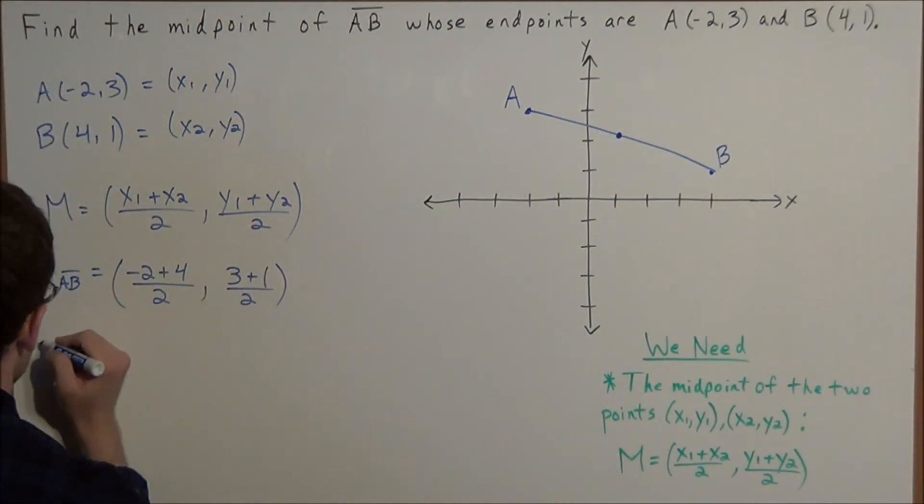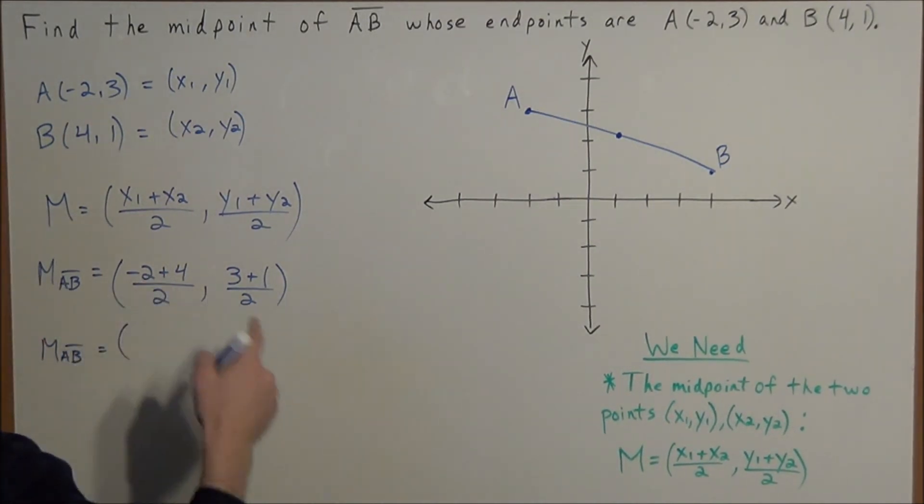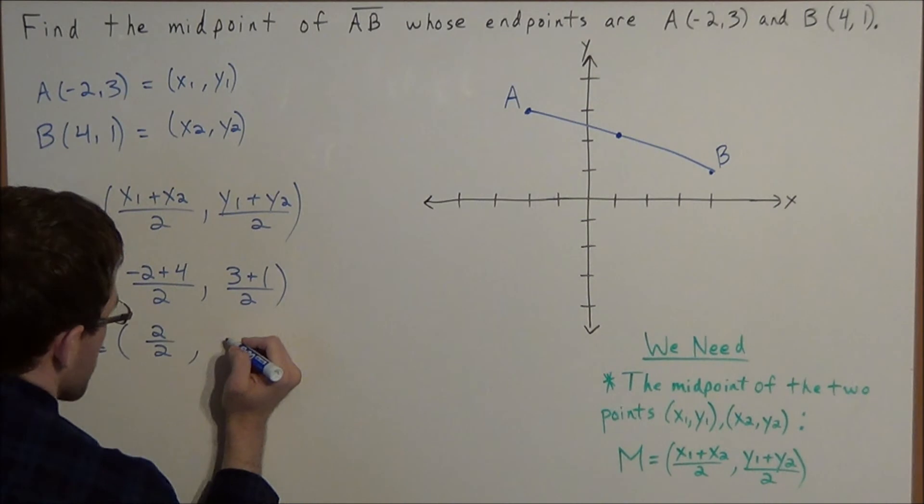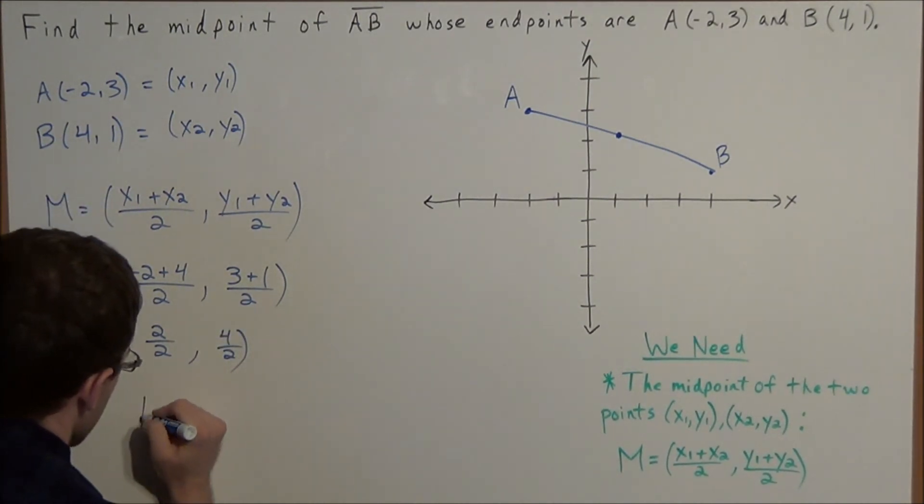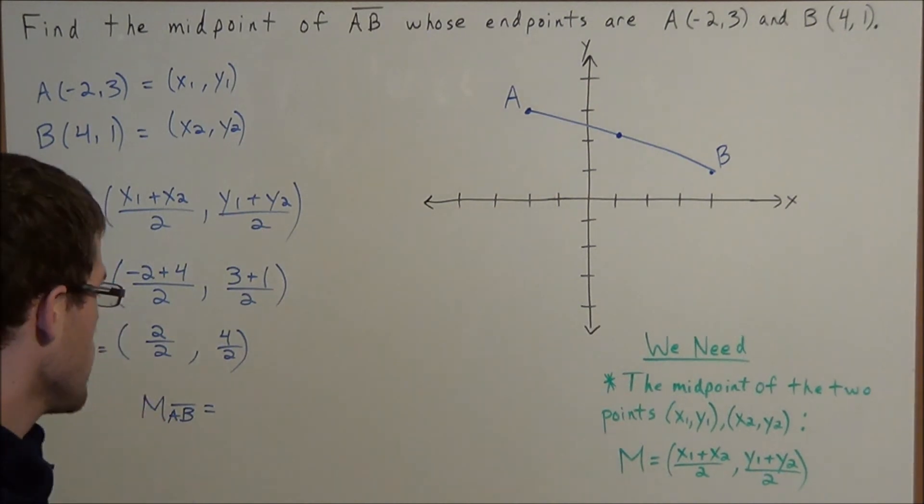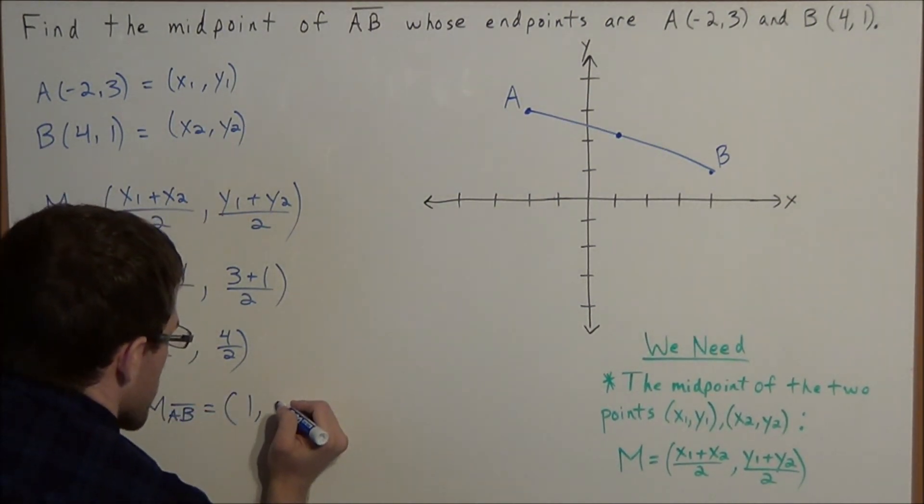So now when we simplify, we have the midpoint of AB is equal to -2 + 4 is a positive 2, so we have 2 divided by 2. 3 + 1 divided by 2, so we have 4 divided by 2. So now the last step, we just simplify, and we have the midpoint of line segment AB is 2 divided by 2, so we have 1, and 4 divided by 2 gives us 2.